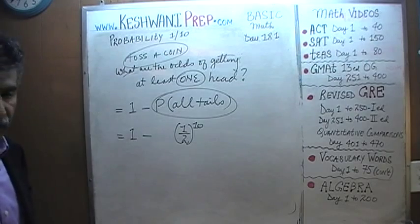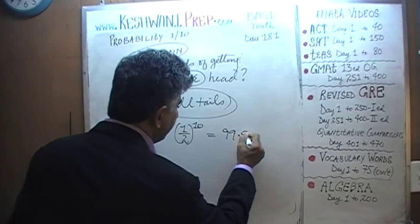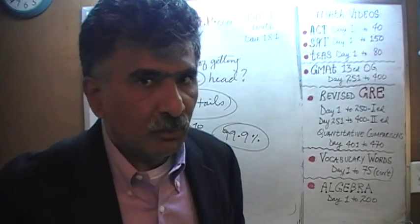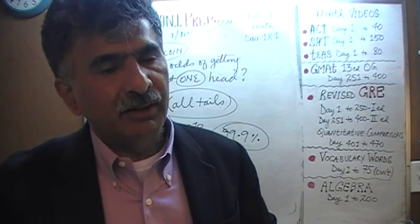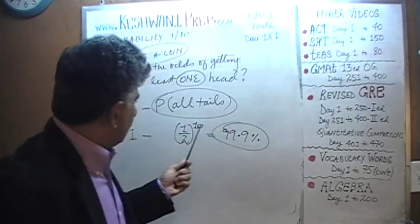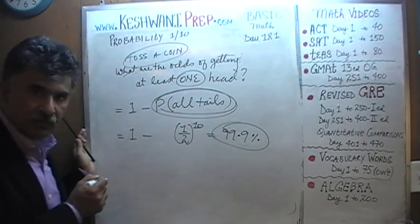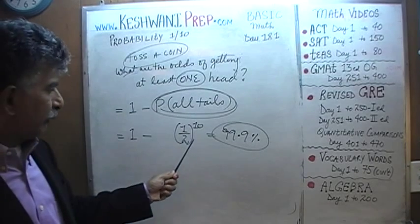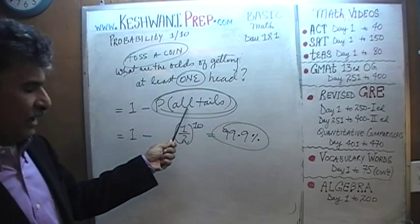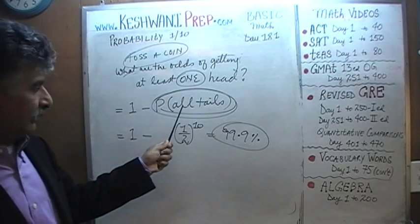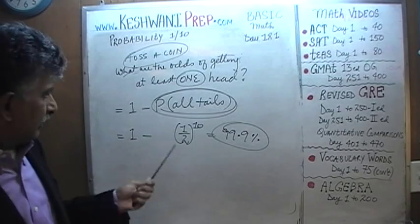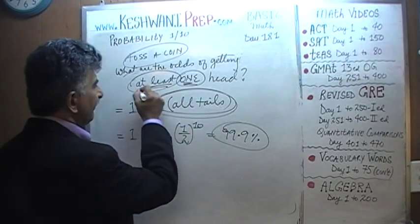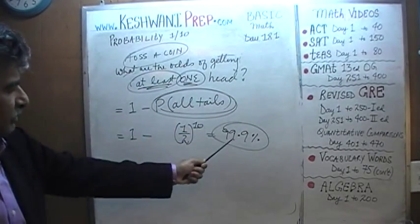So it's 1 minus (1/2)^10, which gives you a 99.9% chance. It is virtually guaranteed that if you toss a coin 10 times, you will get at least one head. The odds of getting all tails — flipping it 10 times and getting tails every single time — is only 0.1%. Therefore, the odds of getting at least one head is simply 1 minus that event, which is 99.9%.